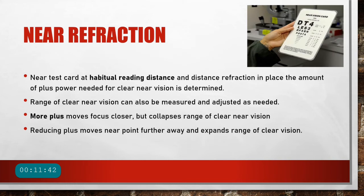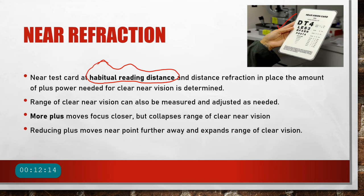We carry out near refraction for presbyopes using near vision cards placed at the habitual reading distance — usually about 25 centimeters, or 33 centimeters for some patients. Distance refraction should always be in place first, and the amount of plus power needed for clear near vision is then determined by placing plus lenses in the trial frame.